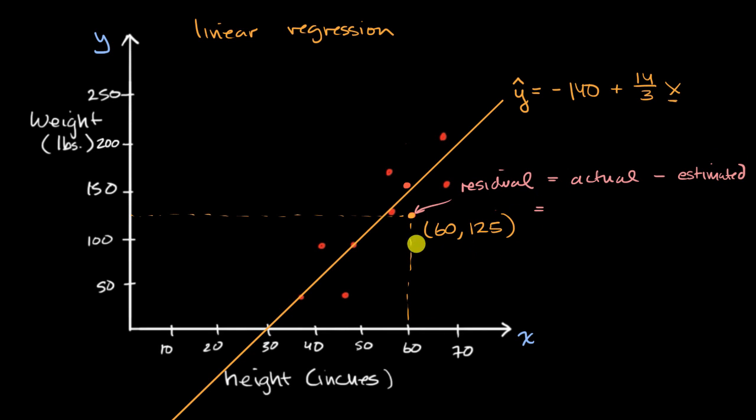Or another way to think about it is, for that x value, when x is equal to 60, we're talking about the residual just at that point, it's going to be the actual y value minus our estimate of what the y value is from this regression line for that x value. So pause this video and see if you can calculate this residual, and you can visually imagine it as being this right over here.